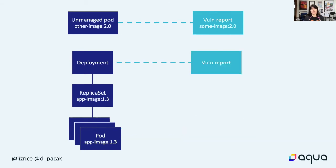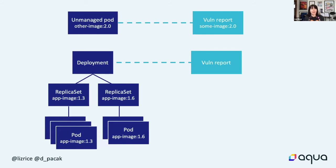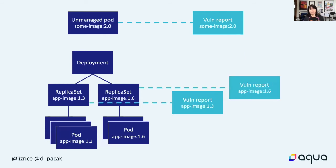An alternative might be to associate the vulnerability report with the deployment - after all, that's the resource Dave is typically going to be manipulating. But there is a problem: there isn't always a single replica set per deployment. If we have multiple replica sets, they may have different images in their pod specs, so we'd need different vulnerability reports for those different images. The conclusion is we need to hold vulnerability reports associated with replica sets. Unmanaged pods can also be replaced with a pod of the same name but a different image, so for that reason we include a label with a hash of the pod spec, so we can tell if the security report for a particular pod is out of date.